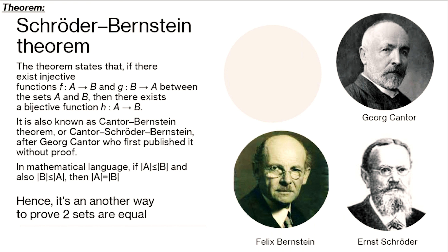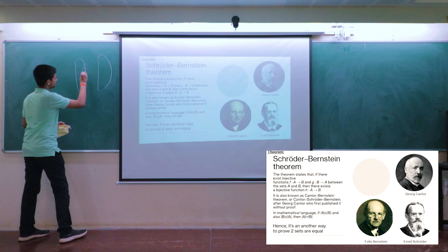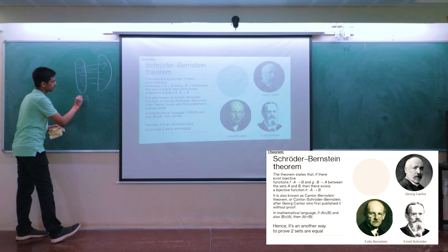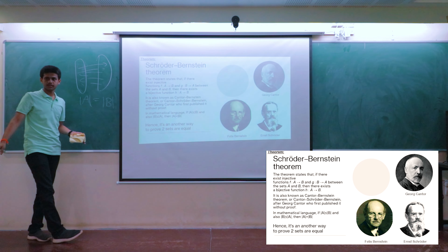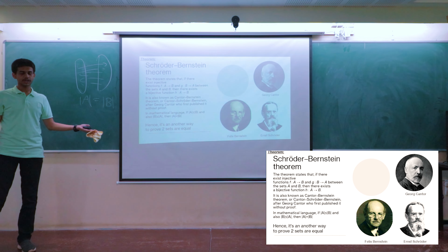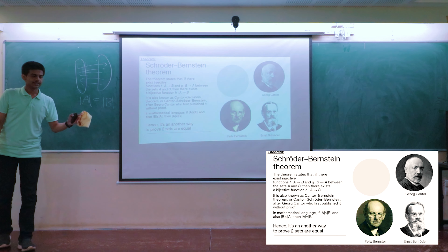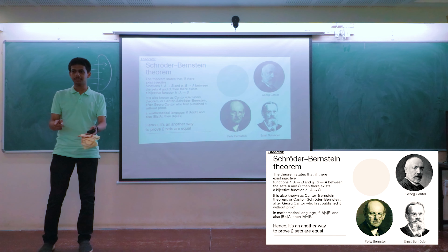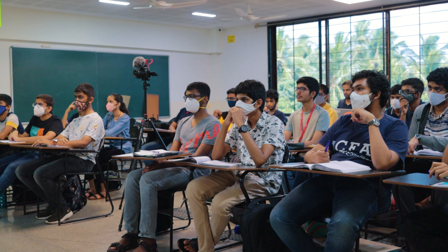One famous theorem in set theory is the Cantor-Schroeder-Bernstein theorem — it was proposed by Cantor without a proof. This theorem states that if there are two sets with an injective mapping from A to B and also an injective mapping from B to A, then the cardinality of A equals the cardinality of B. This is one way to show that two sets have the same cardinality.